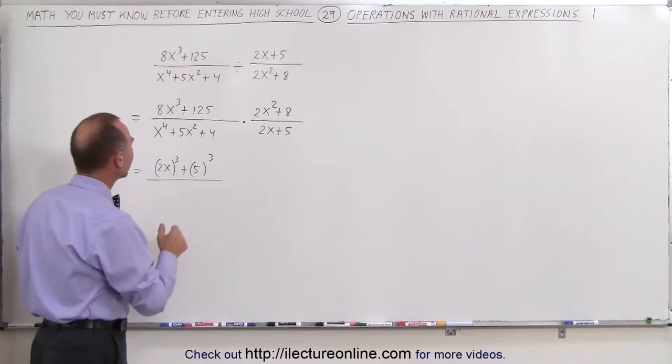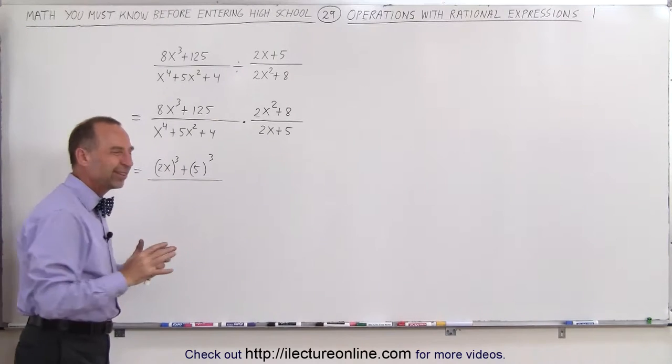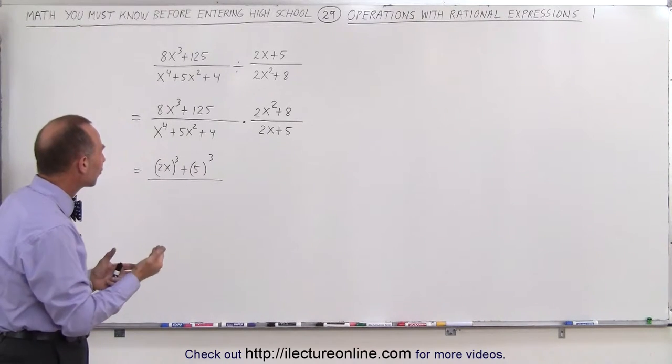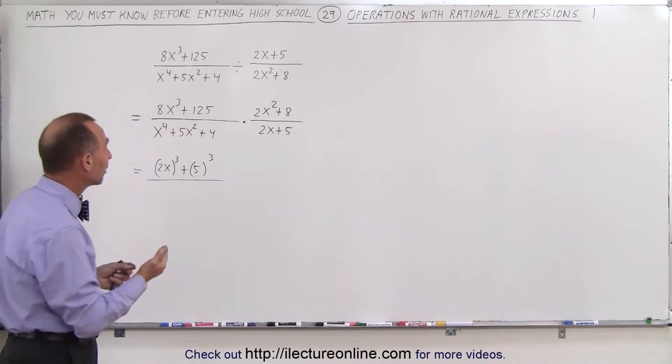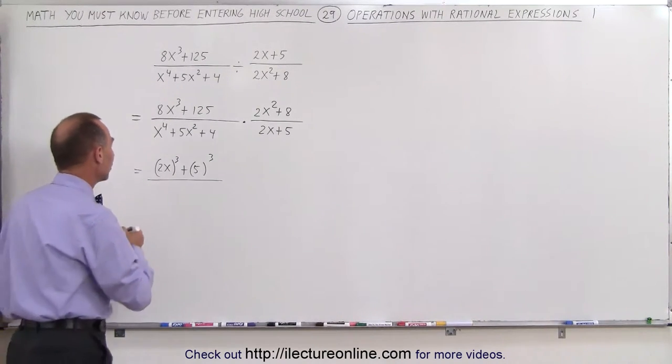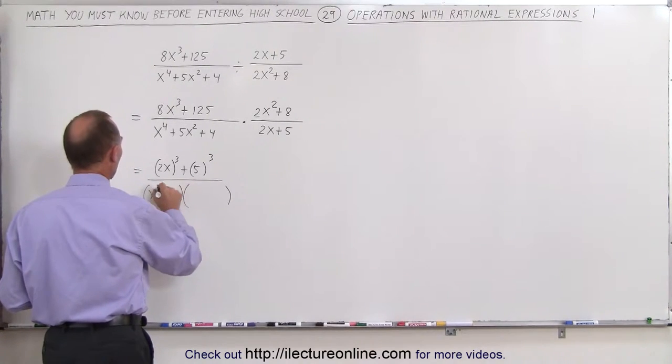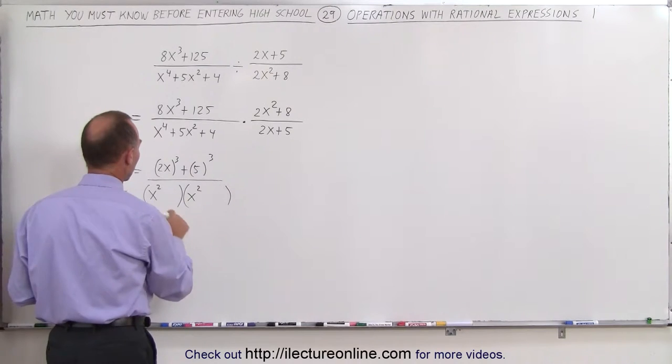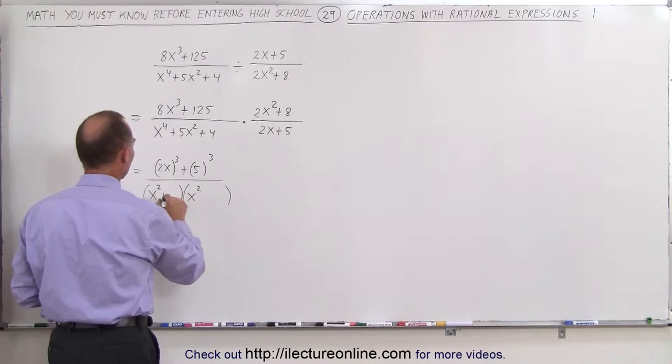and notice here, this is x to the fourth plus 5x squared plus 4. This looks a lot like x squared plus 5x plus 4, but instead of x squared, we have x to the fourth. Instead of x, we have x squared. So this can also be factored as follows. This can be written as x squared times x squared, because x squared times x squared gives you x to the fourth. Everything is positive,